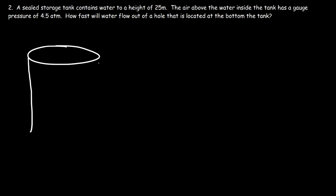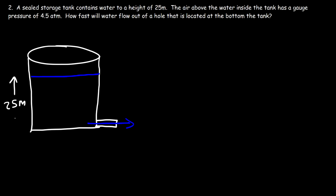The tank has water, and at the very bottom is the hole where water flows out. The height of the water level is 25 meters. The pressure of the air inside the sealed tank is 4.5 atm gauge pressure — it's not open to the atmosphere. The gauge pressure is the pressure relative to atmospheric pressure. Since atmospheric pressure at sea level is 1 atm, a gauge pressure of 4.5 atm means the absolute pressure inside is 5.5 atm.